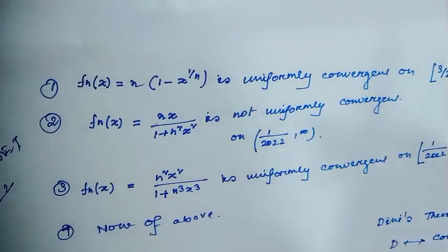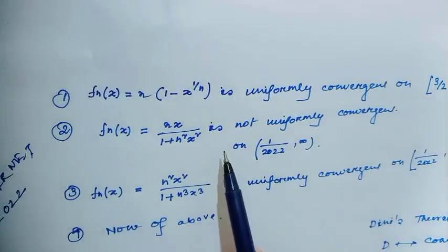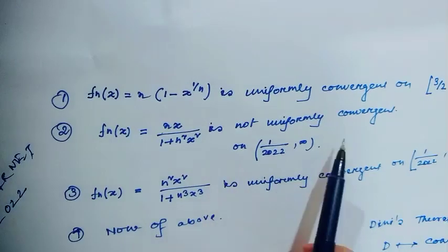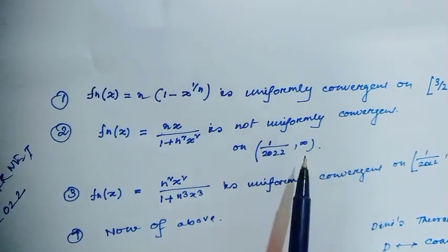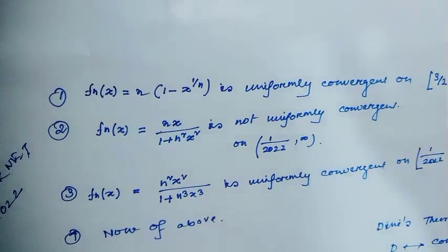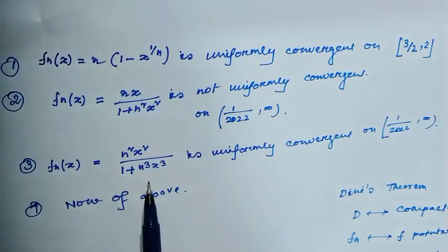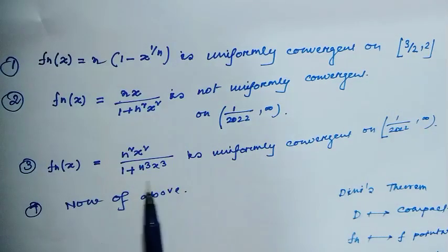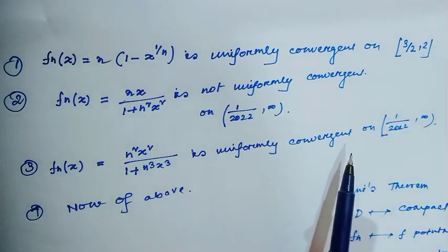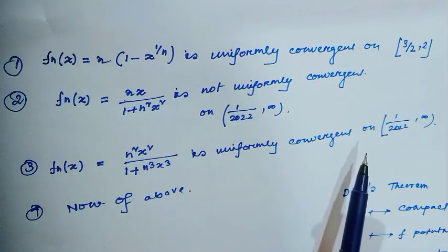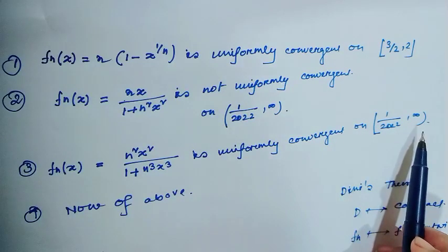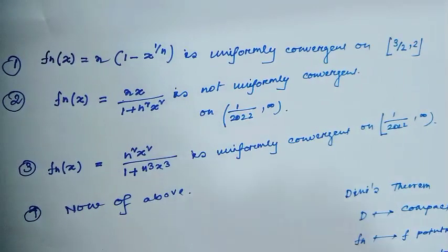Second example: fn(x) = nx over (1 + n²x²), which is stated as not uniformly convergent on the interval (1/2020, infinity). Option 3: fn(x) = n²x² over (1 + n³x³). We have to check if this sequence of functions is uniformly convergent on the interval (1/2022, infinity). And option 4 is none of the above.